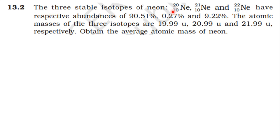The three stable isotopes of neon — neon-20, neon-21, and neon-22 — have respective abundances of 90.51%, 0.27%, and 9.22%. The atomic masses of the three isotopes are 19.99u, 20.99u, and 21.99u respectively. Obtain the average atomic mass of neon.